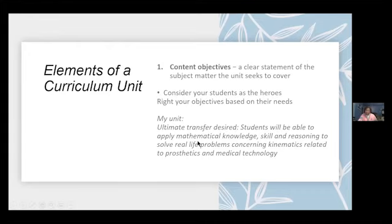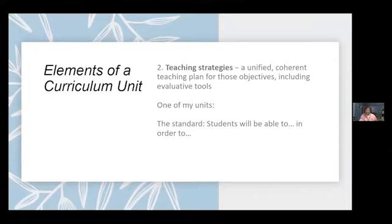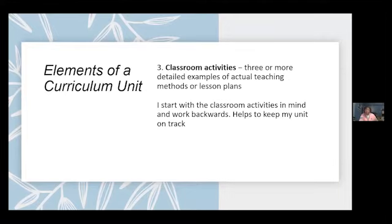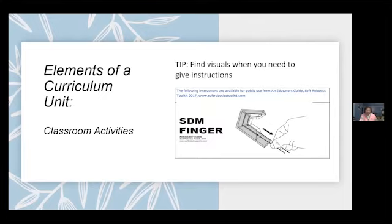Teaching strategies can be pretty basic — what we do. We use our standards and talk about what students will be able to do. For the activities, I really always want something that's hands-on because a lot of what I do is in a textbook. So I start with the classroom activities in the beginning, working backwards to make sure it stays interesting and fun. I also recommend visuals — in the classroom activities, one example was making a prosthetic finger. If you can find visuals, it helps you give your instructions in your appendix and classroom activities.